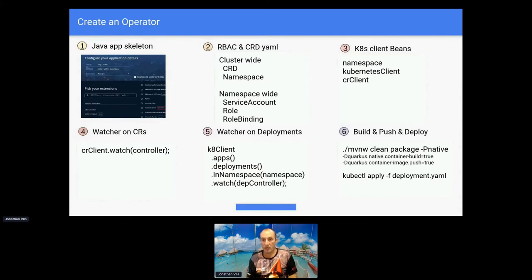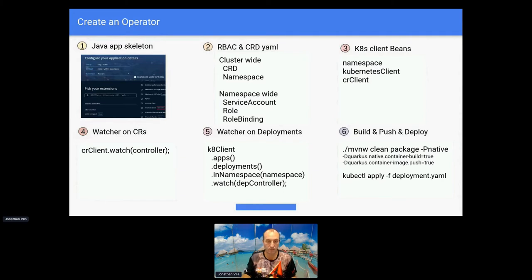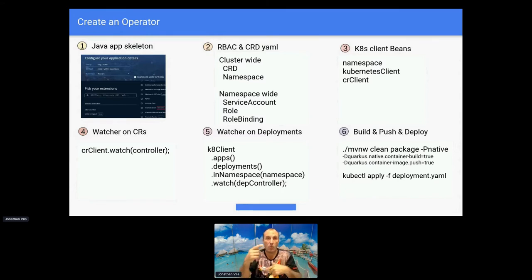Then we have the Kubernetes client beans: an object representing the namespace where our operator is running, a general-purpose Kubernetes client to connect to everything in Kubernetes, and a CR client - for each CRD we create, we have a type-safe client that reacts only to changes in those CRDs. Then we have the watcher - the listener for CR changes using the CR client - and also a watcher on deployments, because we need to know when everything is deployed and ready. Finally, to build, push, and deploy we use Maven and then kubectl to execute the deployment YAML.